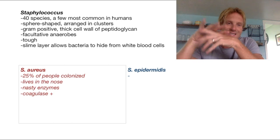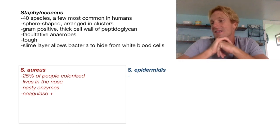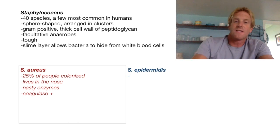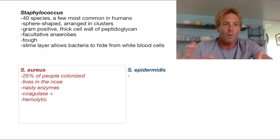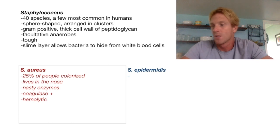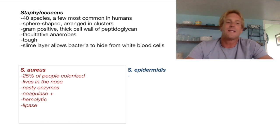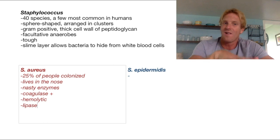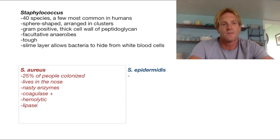Coagulase is an enzyme that allows the bacteria to cause our blood to clot. This can cause little minor blood clots in our tissues and allows Staph aureus to hide from our own immune cells in addition to the slime layer. Another enzyme it has is called staphylokinase, which is an enzyme that allows it to dissolve blood clots. One thing that's common about Staph aureus is that it's hemolytic — it will destroy and eat our own red blood cells, which is a major problem. Another enzyme Staph aureus contains is lipase, which allows it to break down lipids for fuel. Staph will break down the lipids in our own sebum — a lipid-rich substance that our hair follicles secrete to keep our skin oily. Staph aureus uses lipase to eat that sebum as fuel, and that's why it loves to live on our bodies.